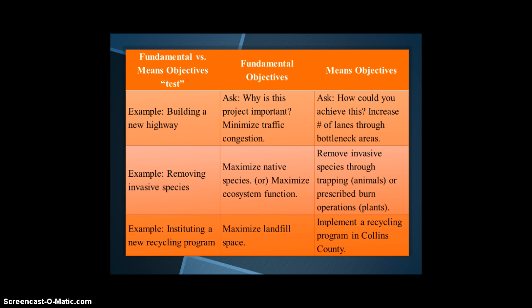The table provides you with some examples of fundamental versus means objectives for environmental projects. The examples include building a new highway, removing invasive species, and instituting a new recycling program. To start, ask why is this project important? This helps you identify the fundamental objectives. To determine the means objectives, consider asking how you could achieve this. In practice, you may find environmental management projects have several competing fundamental objectives, and each fundamental objective may have several means objectives.